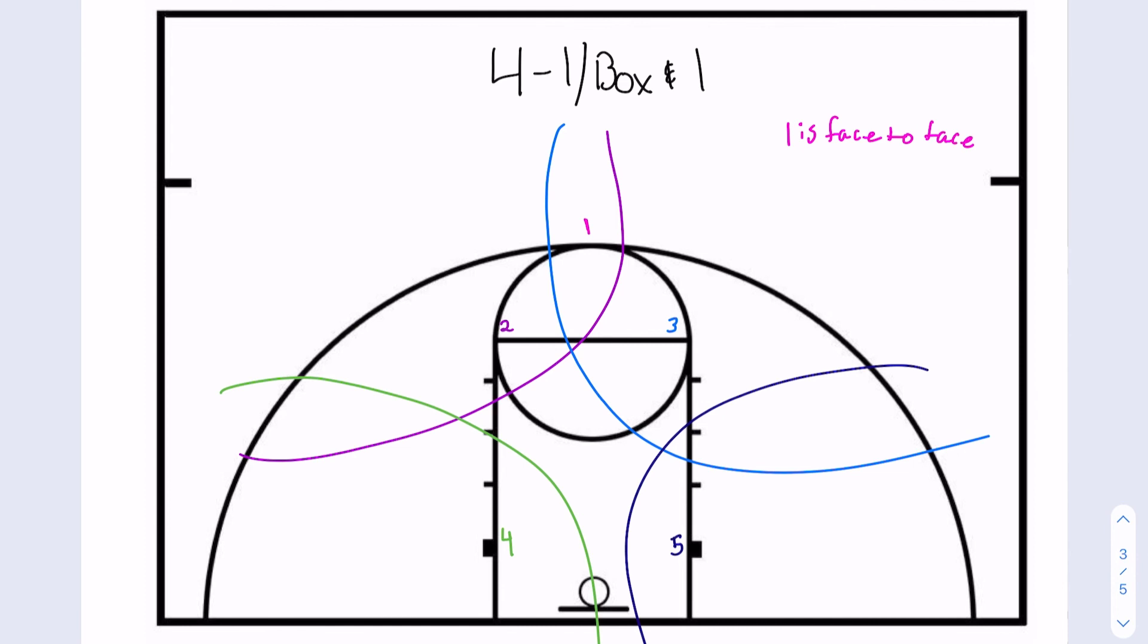This way your goal is to take your best defense to stop their best offense and use your other four players to stop the other four players in a zone with more help defense. But you really want to stop that individual player. So you put your strongest defender on that individual player to stop them. So it's a mix of man to man because that one single player is playing man to man, but the rest of them are playing a zone.